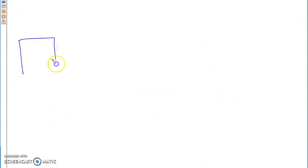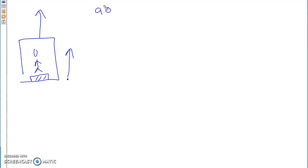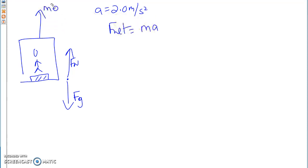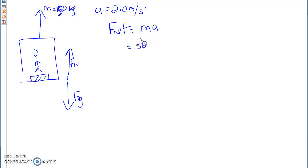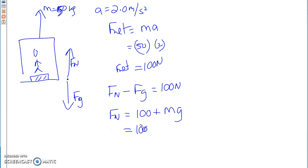My last scenario: I'm in that elevator again on the scale, but now the elevator is moving upward at an acceleration of 2.0 meters per second squared. F net equals mass times acceleration: 50 times 2 equals 100 newtons upward. So FN minus FG equals 100 newtons, meaning FN equals 100 plus MG, which is 100 plus 490, equaling 590 newtons. Your scale reads more — you weigh more when your elevator is accelerating upward.